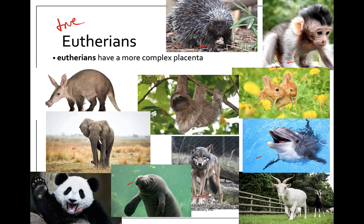Perissodactyla includes rhinos, zebras, and horses. Chiroptera would include bats. So those are the main groups of eutherians. We're going to focus in a little bit on the evolution of primates, which is going to include humans.